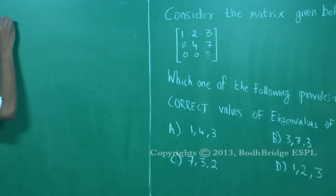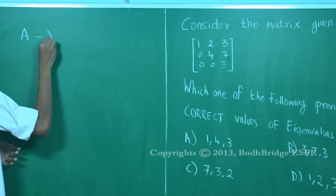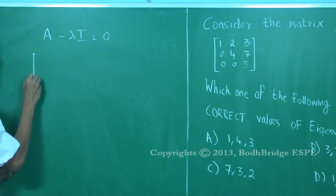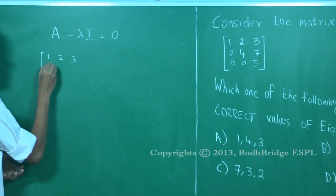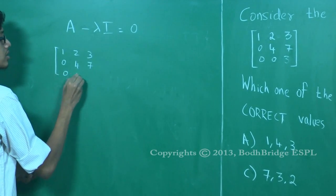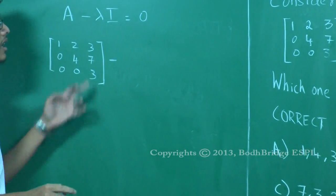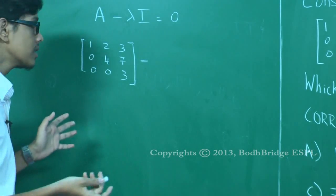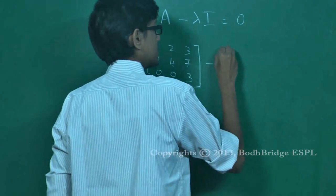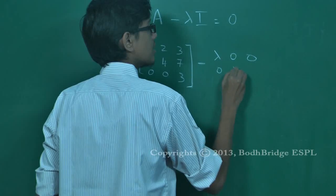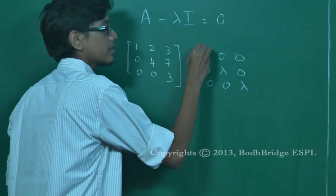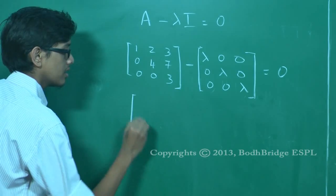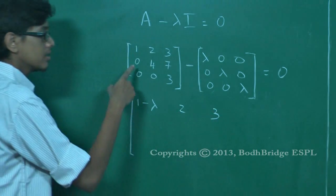Generally, the method to find eigenvalues of a matrix is: if the given matrix is A, then det(A minus lambda I) equals zero, where lambda is the eigenvalue and I is the identity matrix. I is the identity matrix where only the main diagonal elements are one and the rest are zero. So lambda I becomes a matrix where the main diagonal elements contain only lambda: minus lambda, zero, zero; zero, minus lambda, zero; zero, zero, minus lambda.